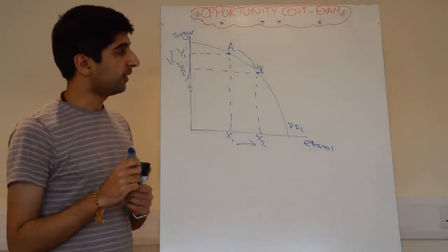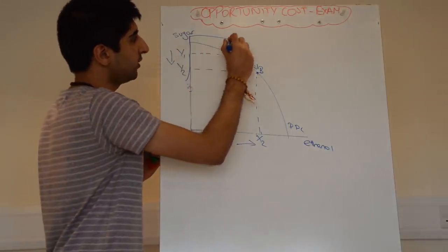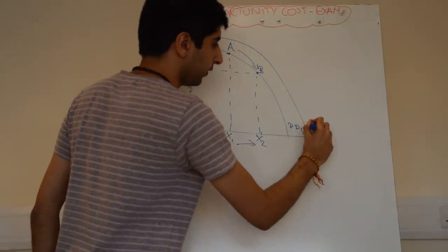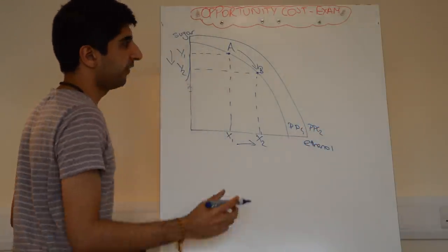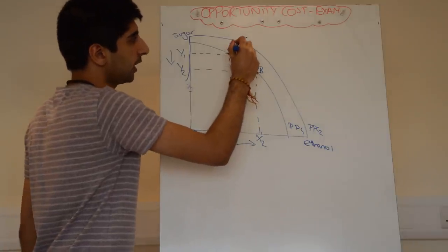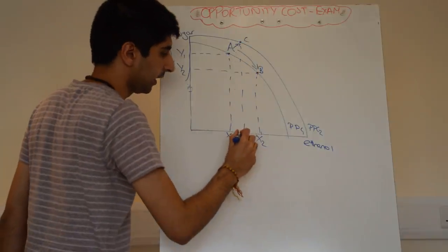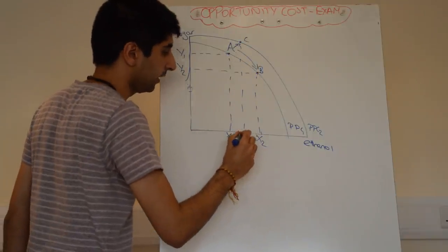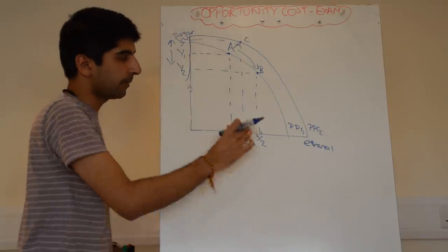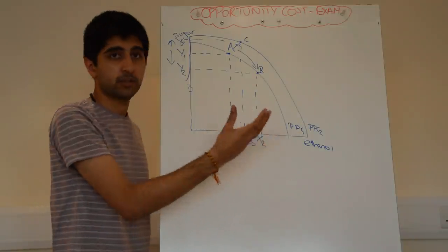You can also do it a different way — you could have shifted the curve outwards. In which case that would be PPC1 and this would be PPC2. If you're starting at point A, you would then take point C out. You show an arrow from point A to point C and label the points — let's say X3 and Y3. You'd still do the same arrows, and you would still get four marks for doing that. Two ways you can show the increase in production of ethanol.